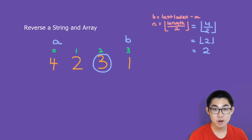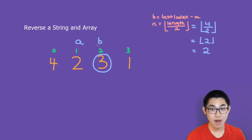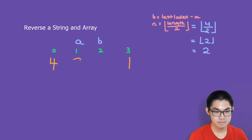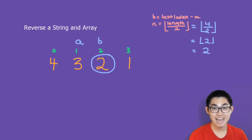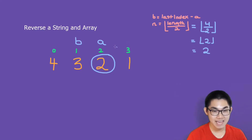Then A goes up and B moves down. Then A and B swap again — this time we swap 2 and 3. Then A goes up and B goes down. Now A is at the pin, which means we stop, because this array is now reversed.